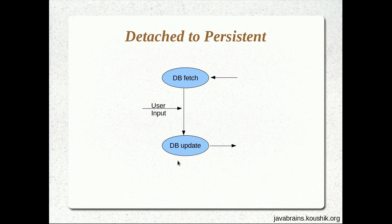Now the problem with this scenario is that there is going to be a think time on the user's side. When I render the display to the user, the user is going to take some time — it might be 5 seconds, it might be 10 seconds, it might even be a minute. The problem here is that I will have to wait for that duration and I don't know how long I need to wait. And then I need to make an update.